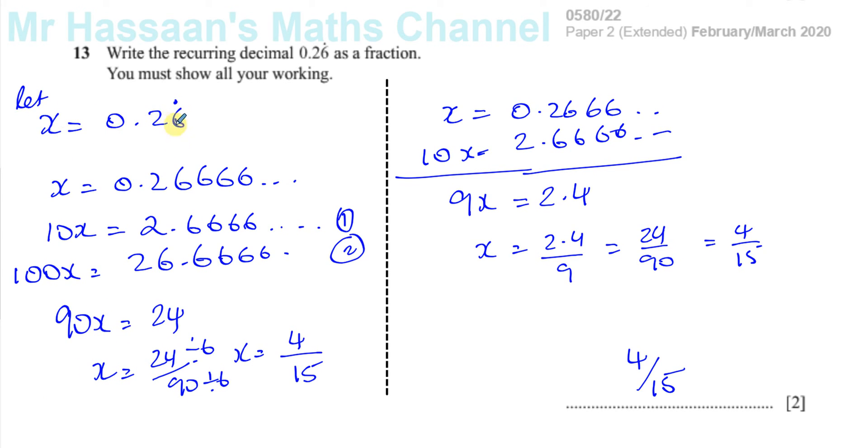As we called x 0.26 recurring, that means 0.26 must equal the x that we come out at the end, which is 4 over 15. So that's question number 13.